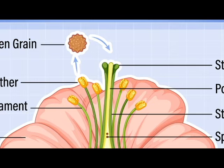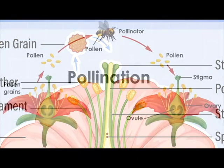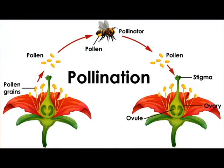The transfer of pollens from the anther to the stigma of the same flower or a different flower of the same plant is called self-pollination. The transfer of pollens from the anther to the stigma between two different plant flowers of the same species is called cross-pollination.